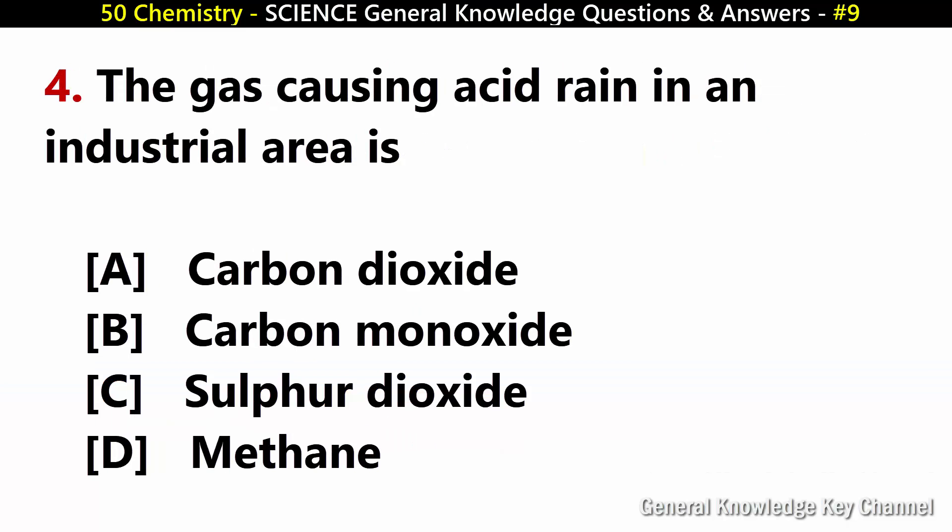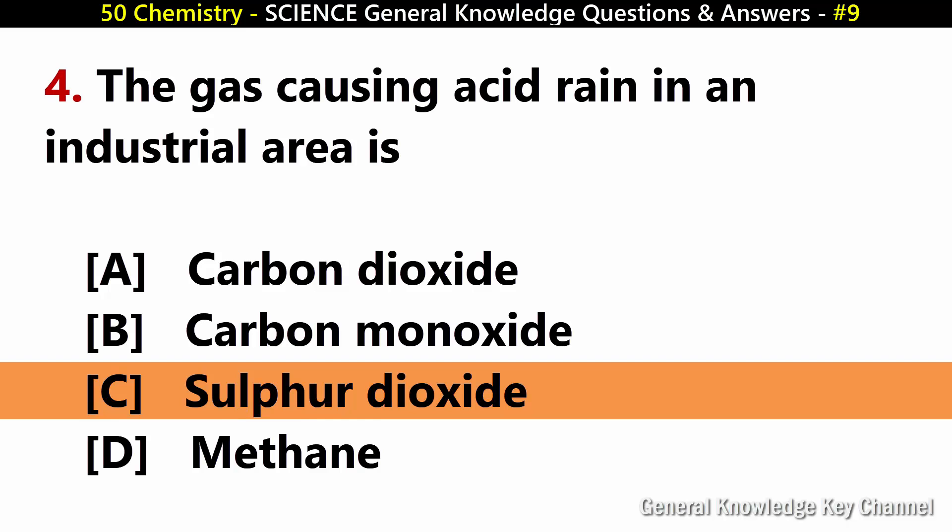The gas causing acid rain in an industrial area is? Answer C: Sulphur dioxide.